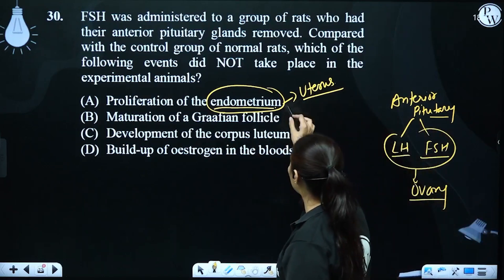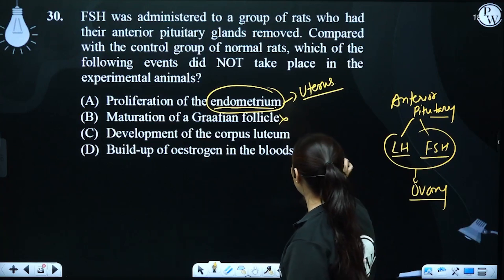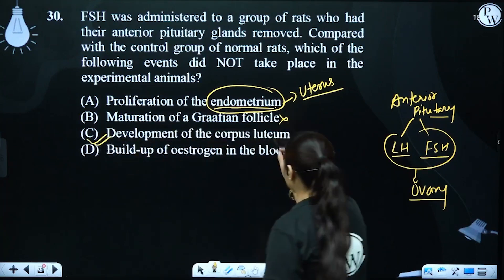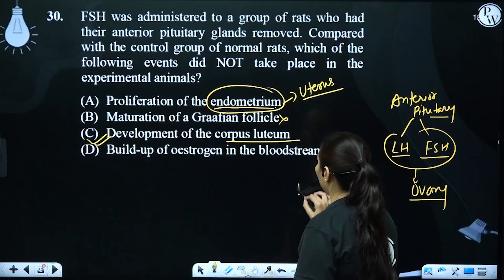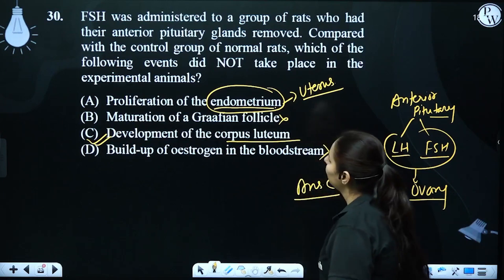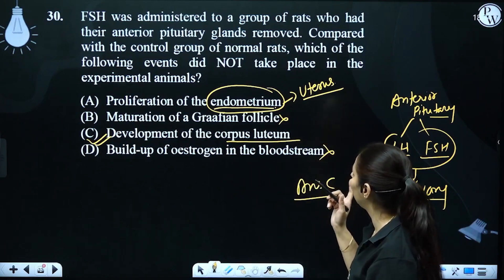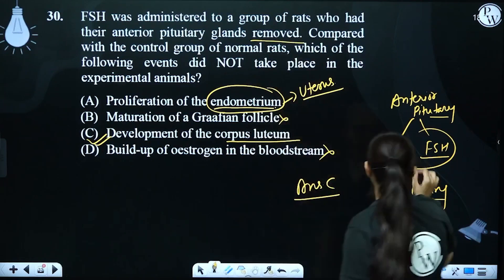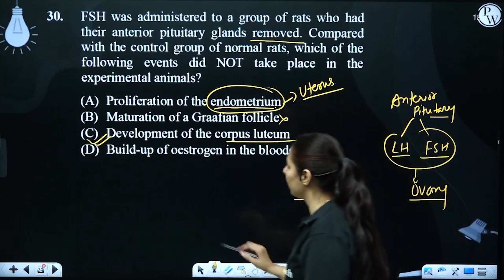Maturation of the Graafian follicle would occur. The build-up of oestrogen in the bloodstream would occur. But the development of the corpus luteum would not occur, because LH is not present — the anterior pituitary was removed. Therefore, the answer is C: development of the corpus luteum.